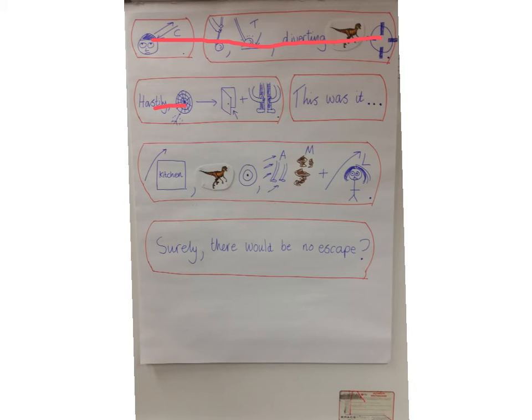Hastily, she darted into an open cupboard and clutched her knees. This was it. Across the kitchen, a velociraptor sought out its target, accelerated through the mess, and launched itself at the girl. Surely there would be no escape.